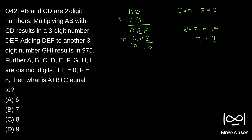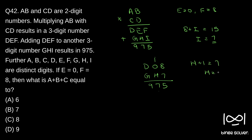Now, E is 0, so there is a carryover. We have D, E, F as D, 0, 8 and G, H, I is G, H, 7, giving 9, 7, 5. There is 8 plus 7 equals 15, so there is a carryover. H plus 1 is 7, so H is equal to 6. We got H as 6.